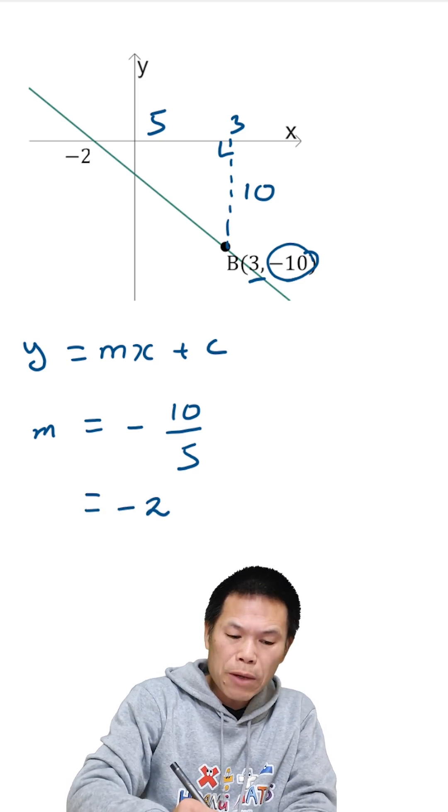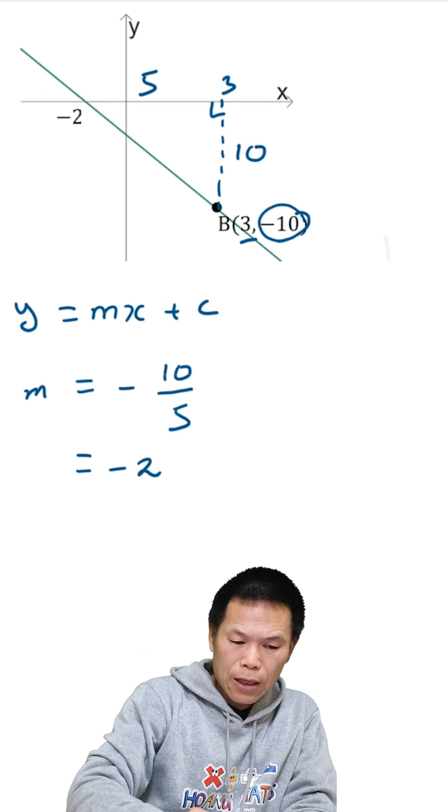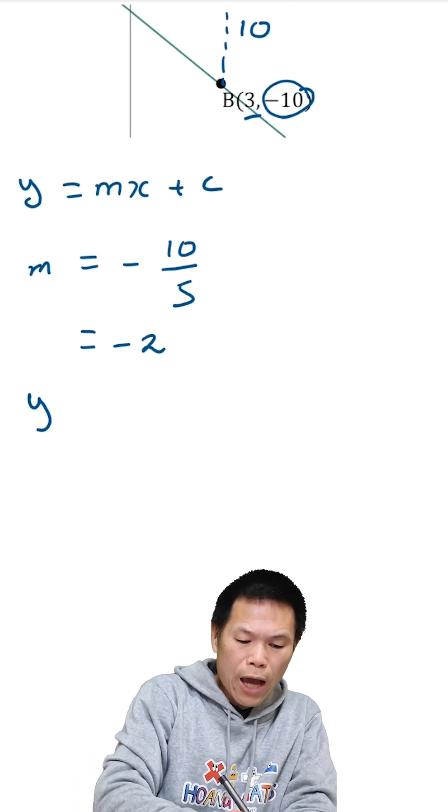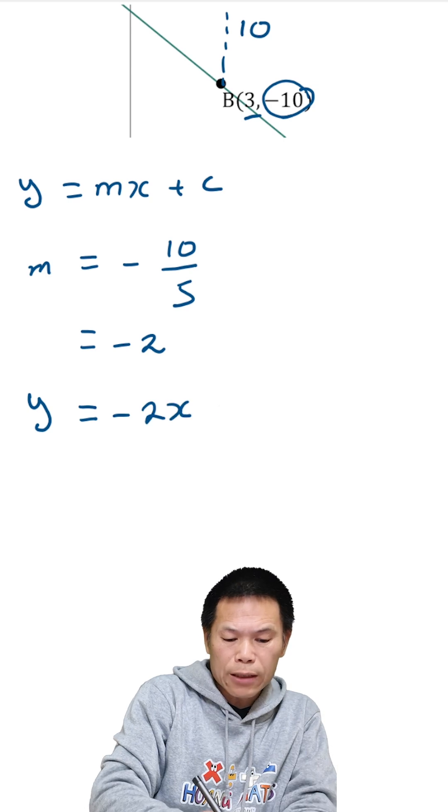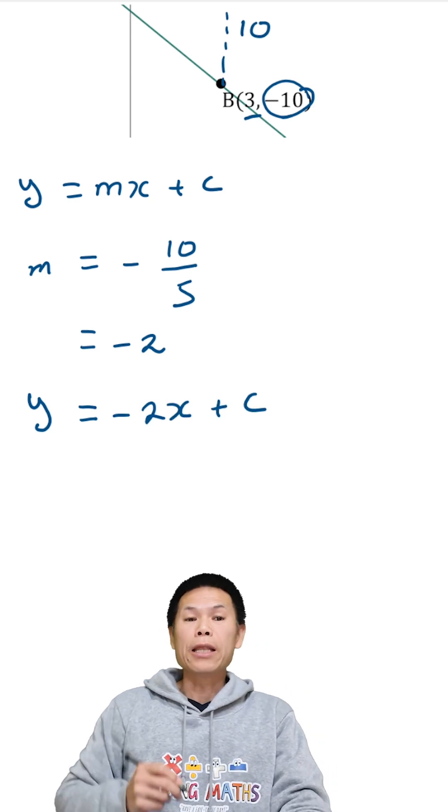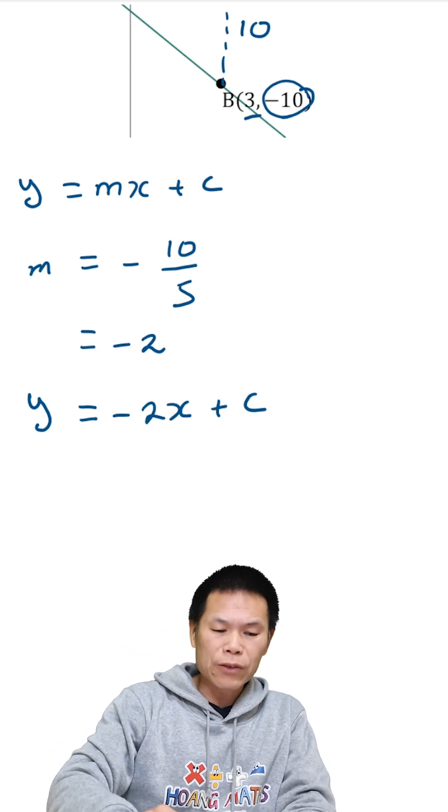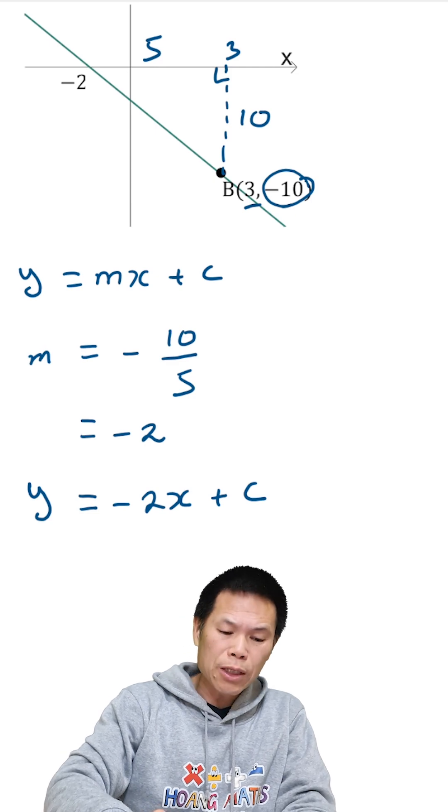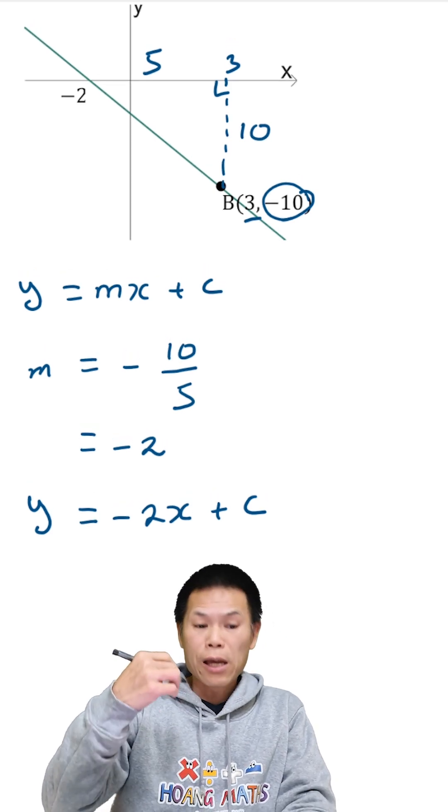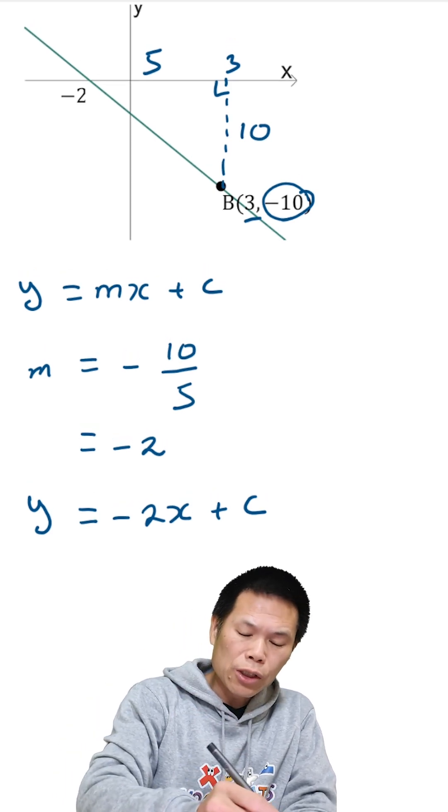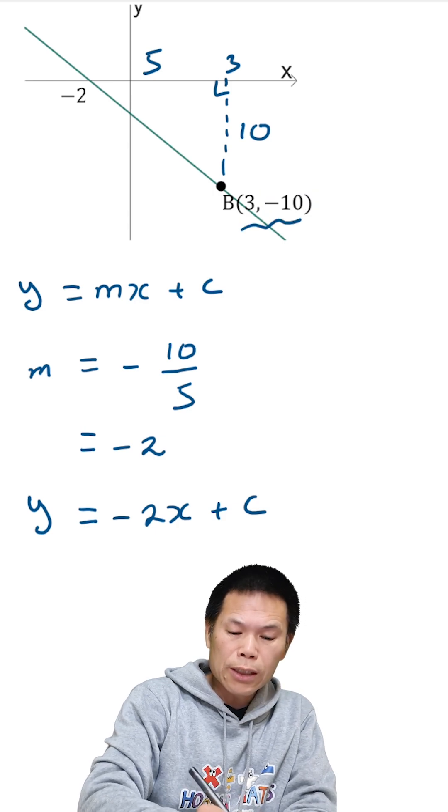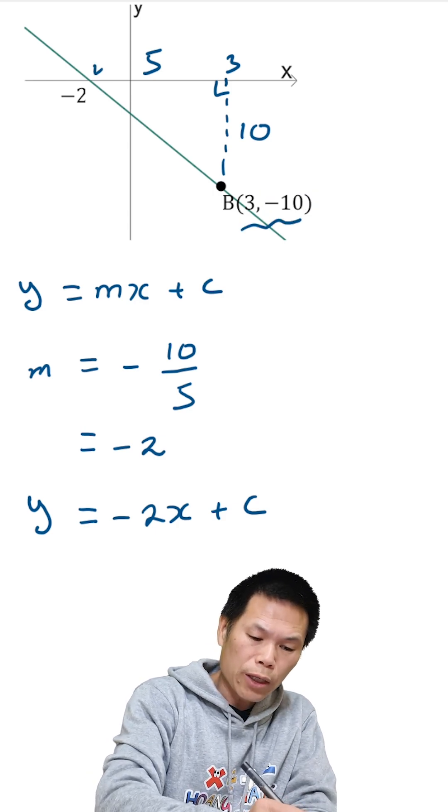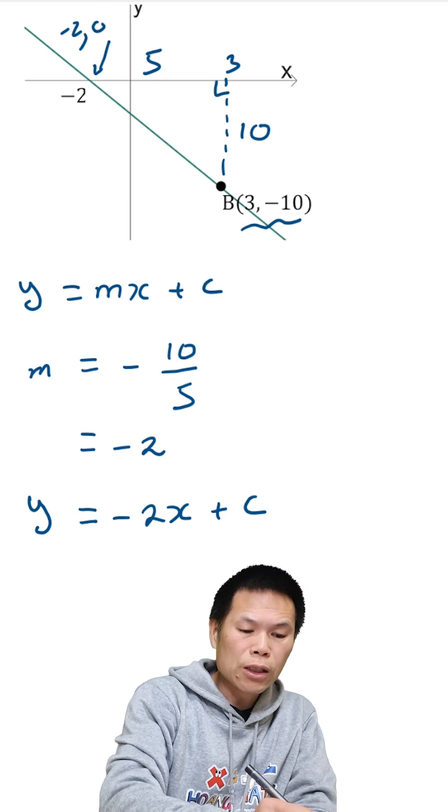So this means that, let me just move this down, so y is mx, so become negative 2x, we add a c. Then we just need to find the value of c, that is the y-intercept, and we need to find one to set by using either this point here, which is 3 negative 10, or this point here, negative 2, 0.